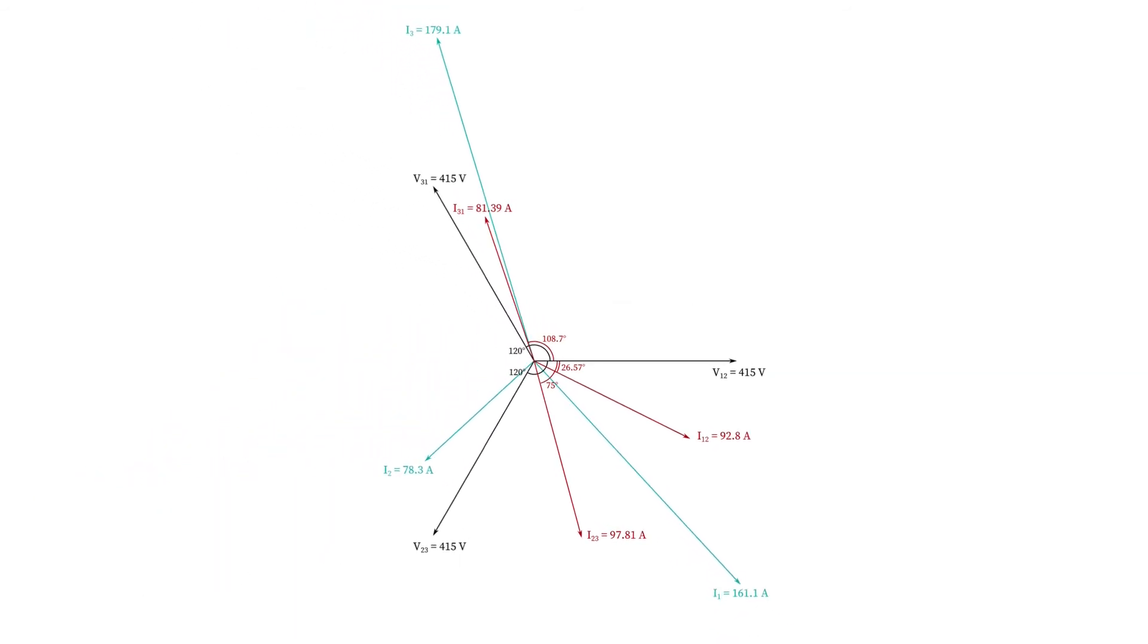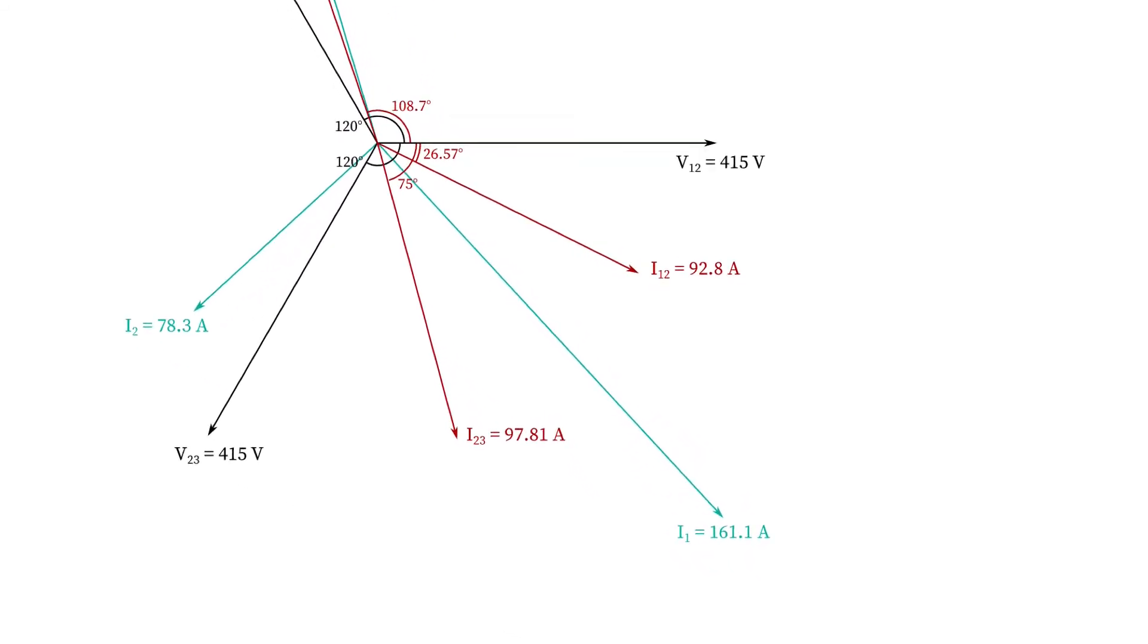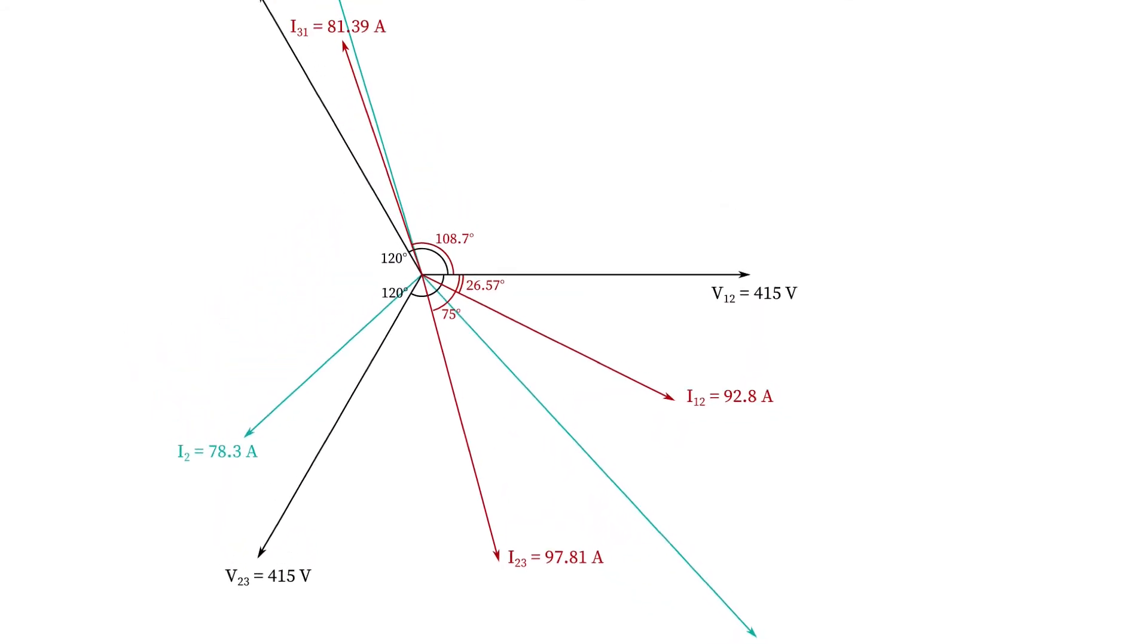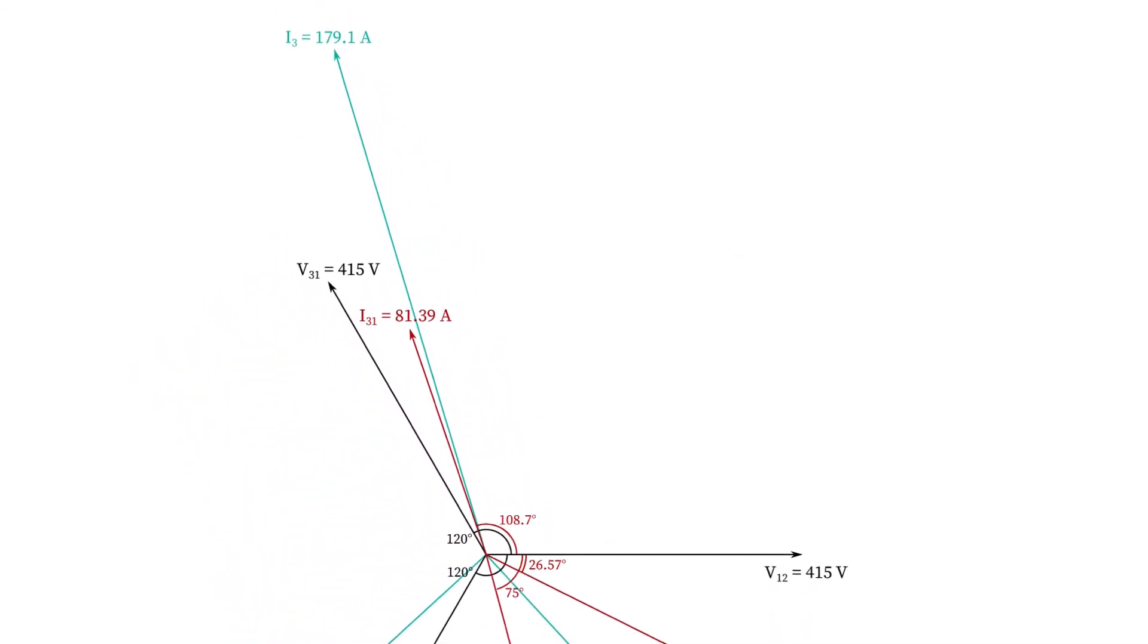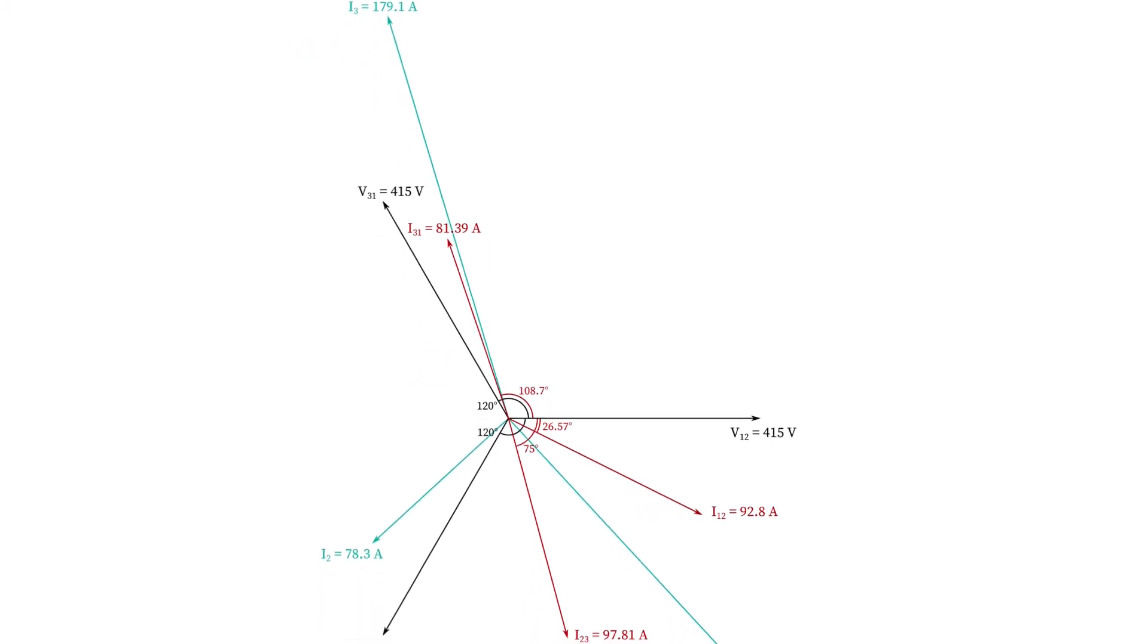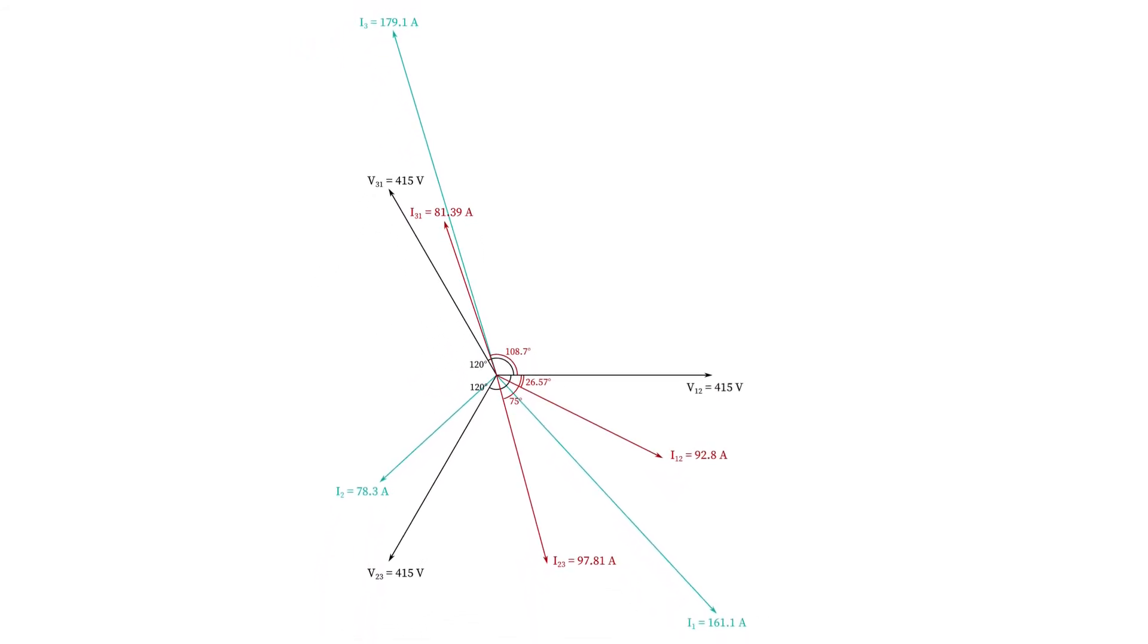And then here in green are our three line currents I1, I2 and I3. We don't have a neutral current like we did in the star network. We looked at the unbalanced star network in a previous video and calculated the neutral current. There's no such thing as a neutral current because we have no neutral point or star point in a delta network, but we can still see clearly that this network is not balanced when we see it visually in a phasor diagram.